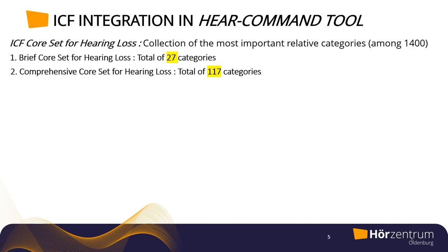The ICF core set for hearing loss is the collection of the most important relevant categories among the 1,400 ICF categories. It has two collections: the brief one with 27 categories covering the most important aspects of hearing loss and its consequences, and the comprehensive one with 117 categories providing a broad perspective.